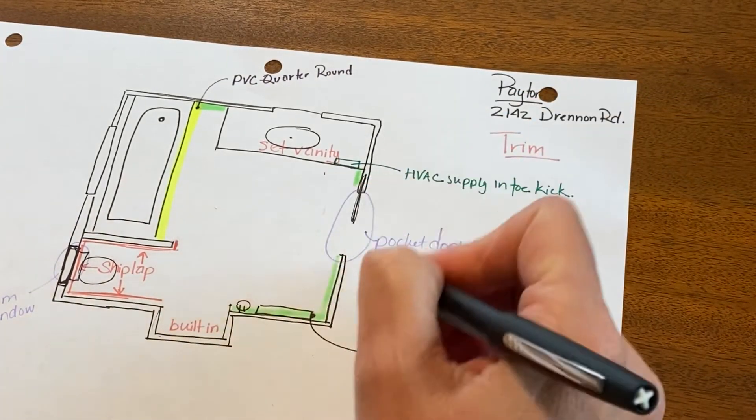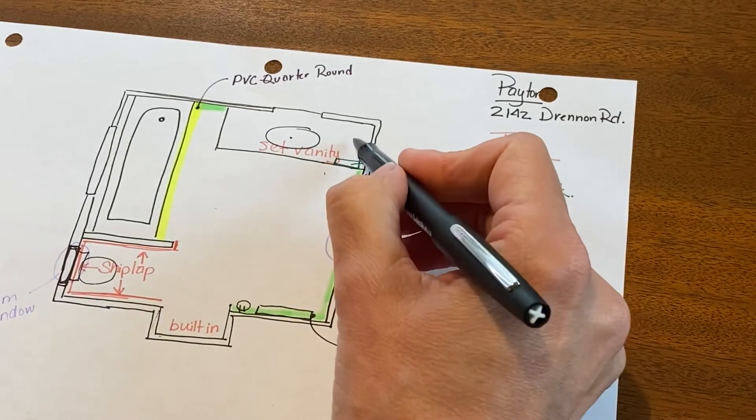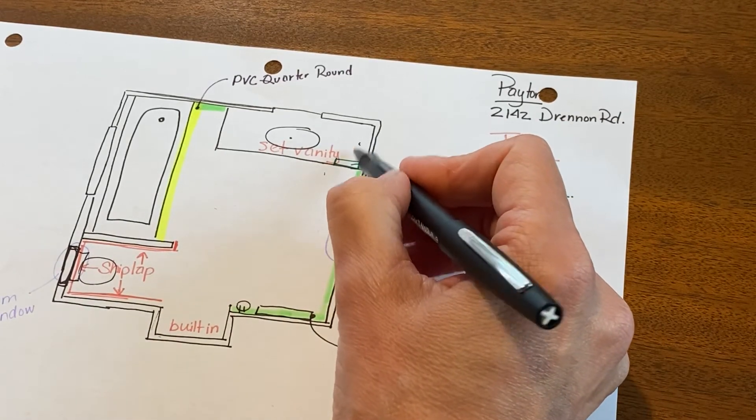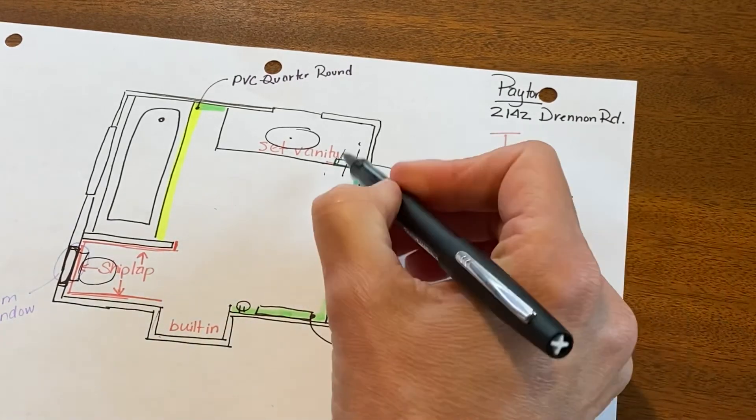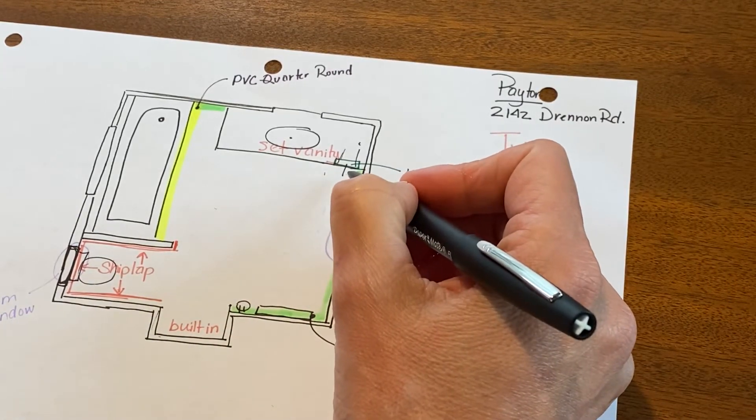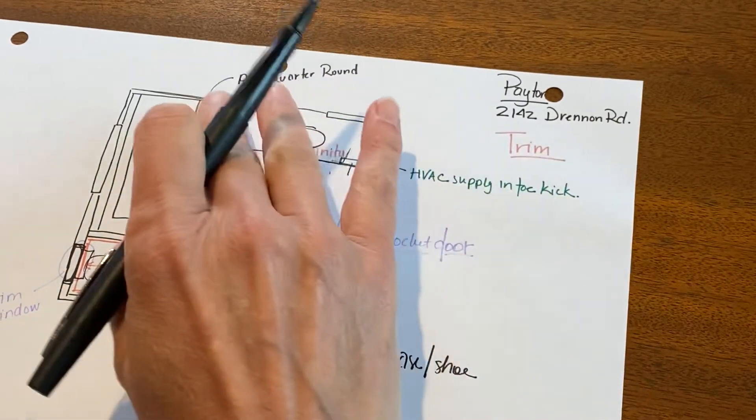We changed it to a pocket door, which freed up a lot of space in the room. We took that HVAC supply vent that was here and we put a boot on it and ran it out through the toe kick of the vanity so that we could get our air that way and be able to move this vanity all the way to this wall.